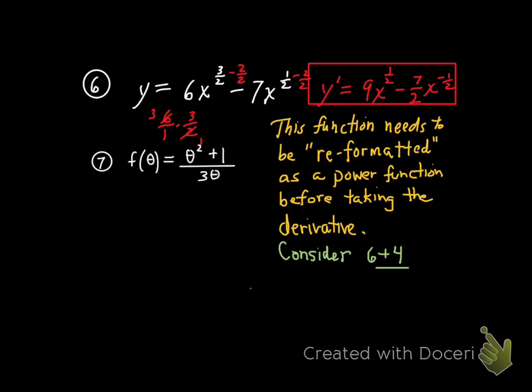So this function needs to be reformatted as a power function before taking the derivative. Here's how. Consider this. What if I gave you this? This is an aside. What if I gave you 6 plus 4 over 2? What's the answer? 6 plus 4 is 10 divided by which is 5. I get 5. Yeah, I agree with you. You get 10 over 2, which is 5. What if I challenged you to do this another way?